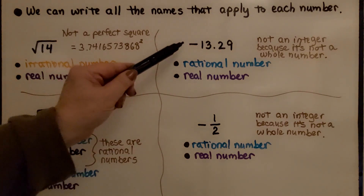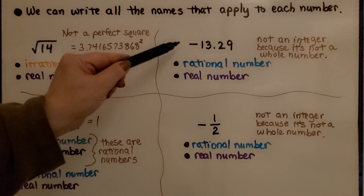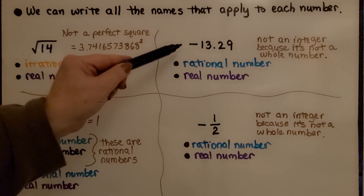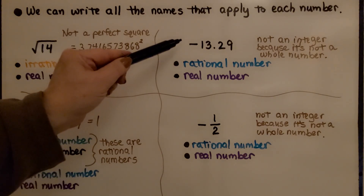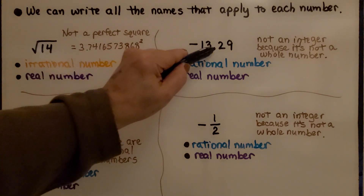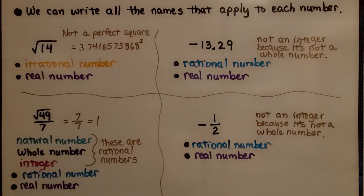Here we have negative 13 and 29 hundredths. It's not an integer because it's not a whole number — integers are negative and positive whole numbers, and that decimal point means it's not a whole number. It is a rational number and it is a real number.